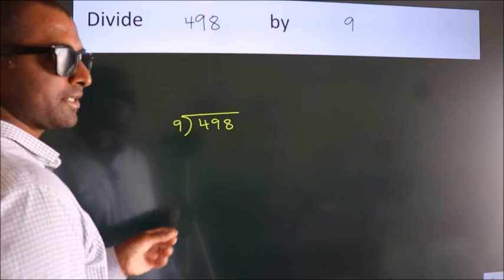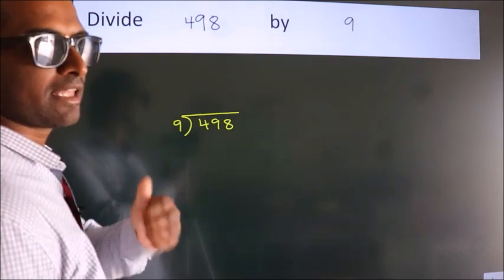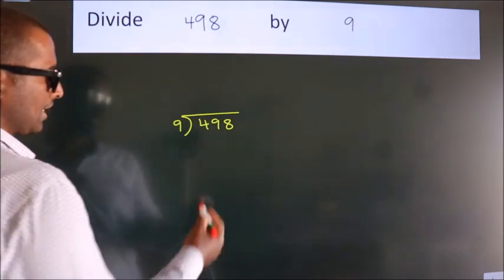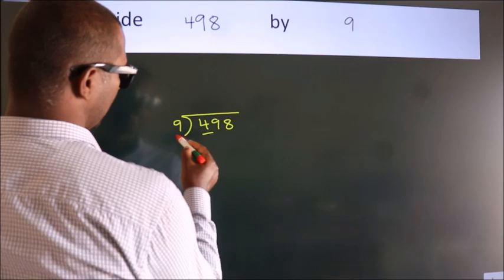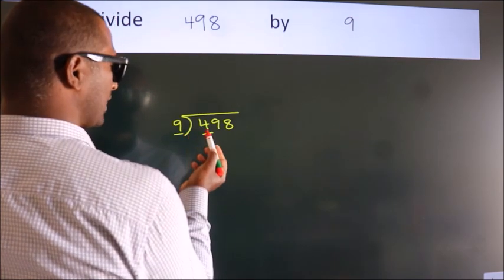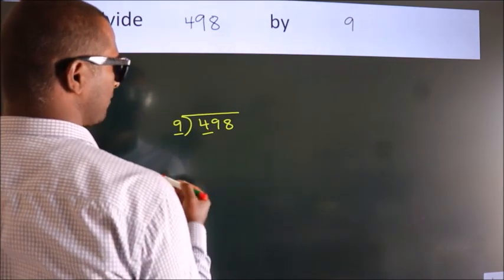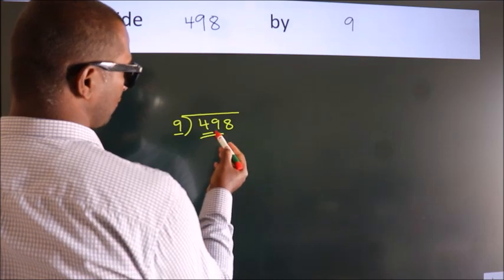This is your step 1. Next, here we have 4. Here 9. 4 is smaller than 9, so we should take 2 numbers. 49.